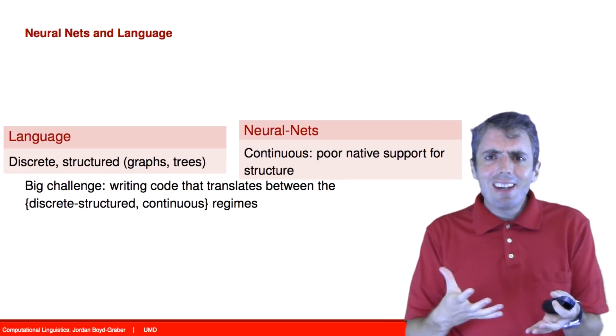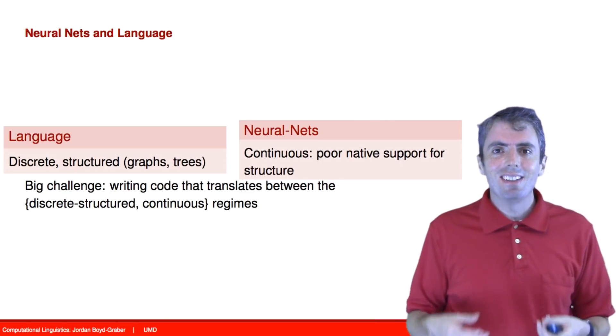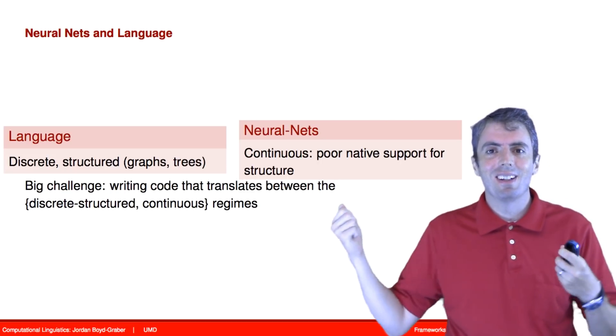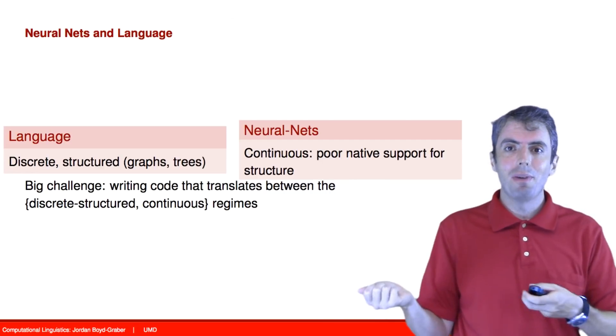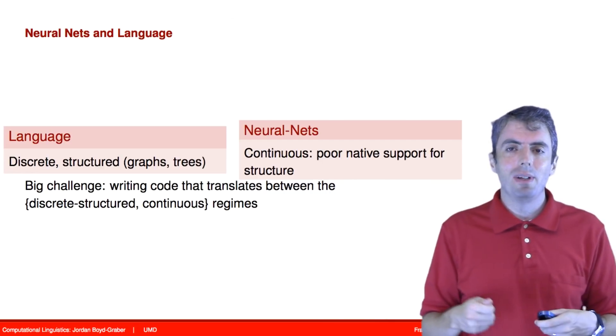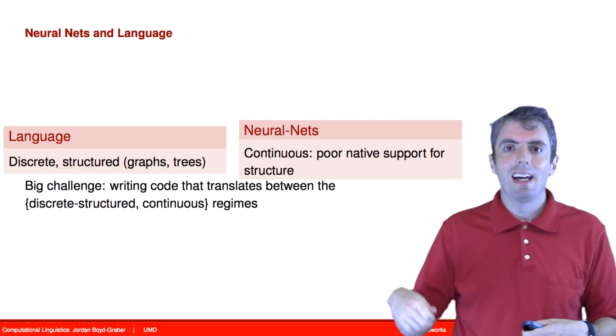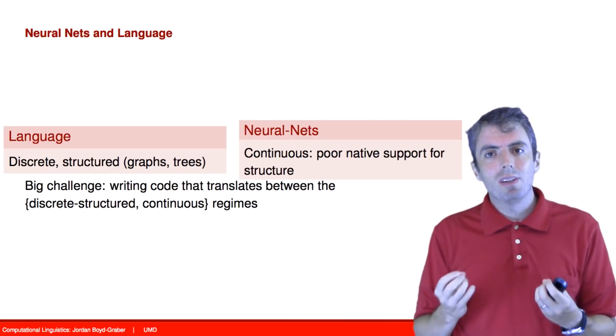But in language, everything's discrete. Words are discrete. There's no such thing as 1.5 times rutabaga or the average between tree and bartholomew. Words are discrete.